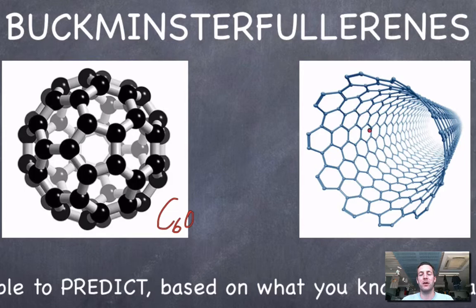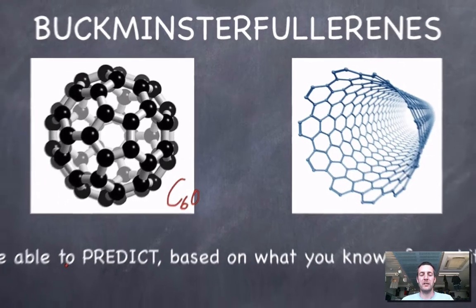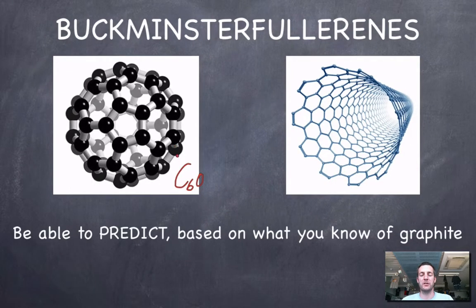Carbon nanotubes - we are hoping one day might be constructed from these buckminsterfullerenes and made into very useful things. You don't really need to remember the structure of these, certainly you don't need to be able to draw them. But you ought to be able to predict what sort of properties buckminsterfullerenes will have because you know about graphite.